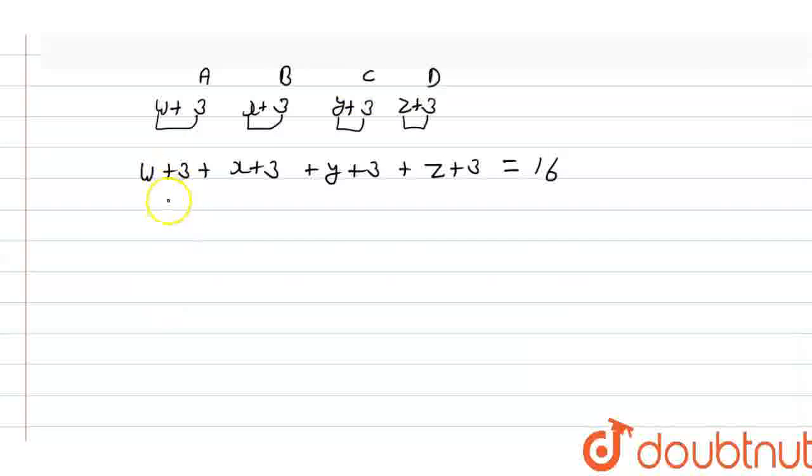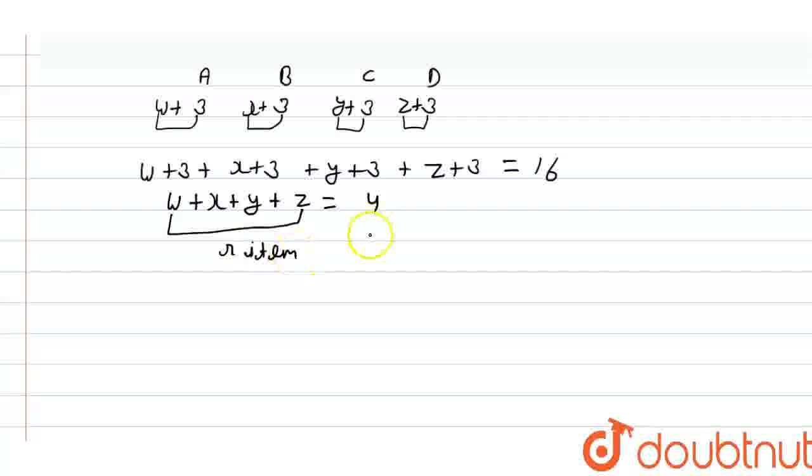So from here, W plus X plus Y plus Z equals 4. Let's assume these are R items and this is N. So we have to distribute N into R items.